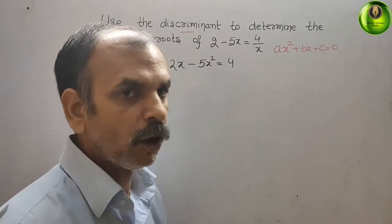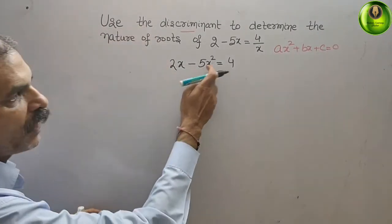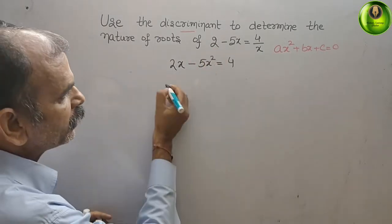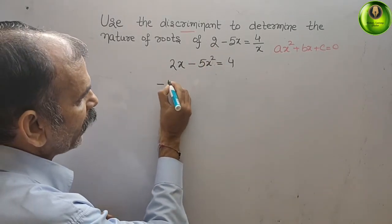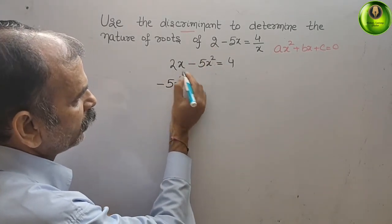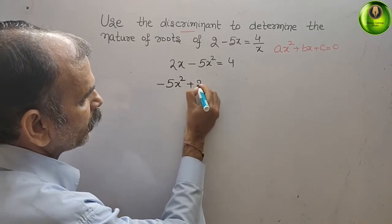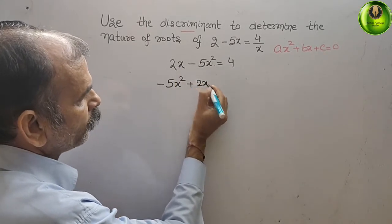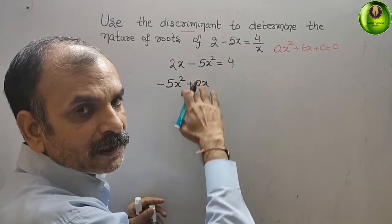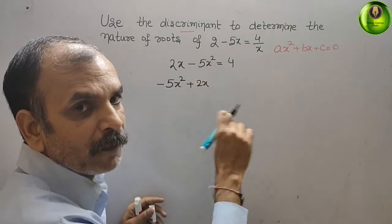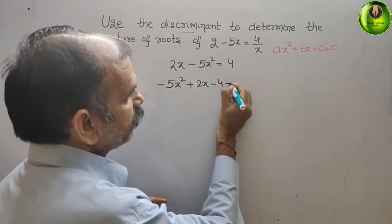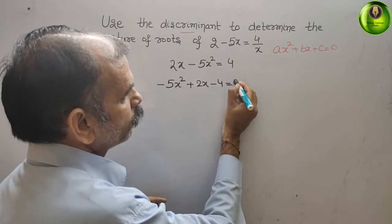After rearranging: minus 5x squared is the first term, then plus 2x, and the 4 from the right side comes to the left as minus 4. So the equation becomes minus 5x squared plus 2x minus 4 equals 0.